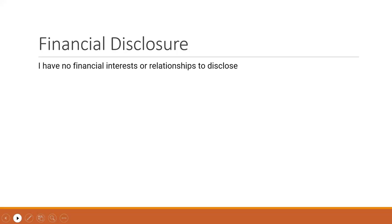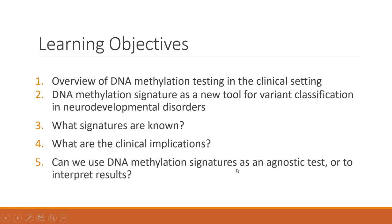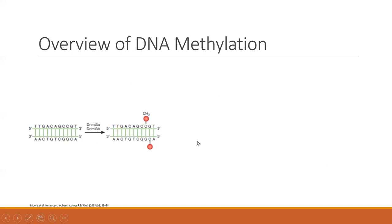I have no financial interest or relationship to disclose. For the learning objective of this talk, I'm going to give a brief overview of DNA methylation testing currently applied in clinical settings, with a focus on imprinting disorders. I will also discuss the DNA methylation signature as a new tool for variant classification, specifically in neurodevelopmental disorders — what signatures are known, their clinical implications, and how we can use them to classify variants or as an agnostic test to predict diagnosis.